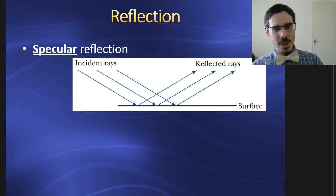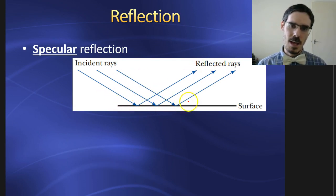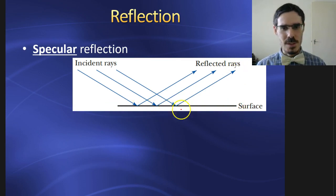Now, that's what happens when you have a mirror, a very flat surface. We call that a specular reflection. All the incident light rays, all the incoming light, is reflected at the same angle off the surface. That's what happens if the surface is smooth.